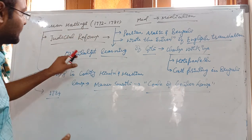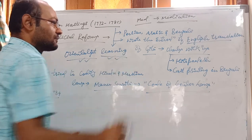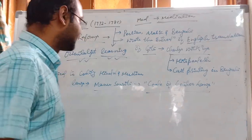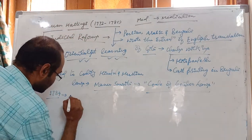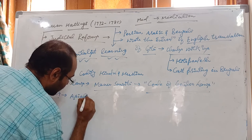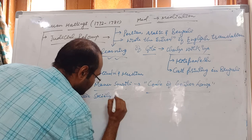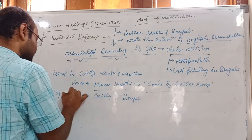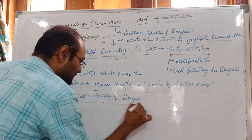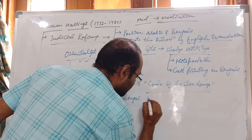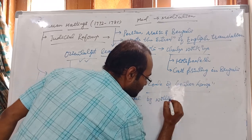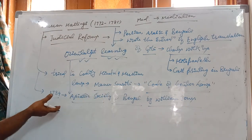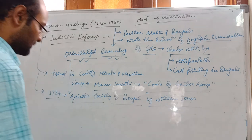Also during his reign, in 1784, the Asiatic Society of Bengal was established to promote orientalist learning and knowledge of Asia, so that English officers could understand Indian customs and traditions — since the company had now assumed direct responsibility for ruling India. The Asiatic Society of Bengal was established in 1784 by William Jones. These are very important points from the prelims point of view.